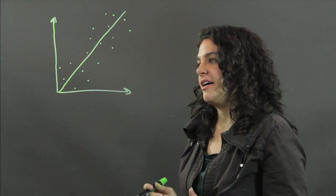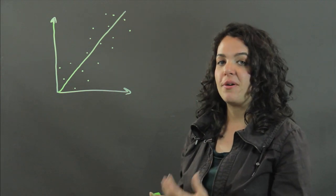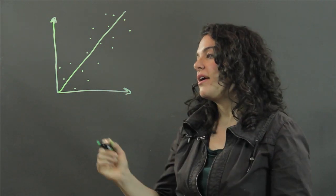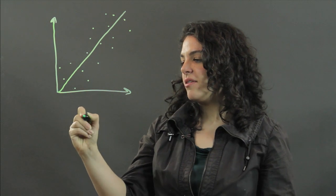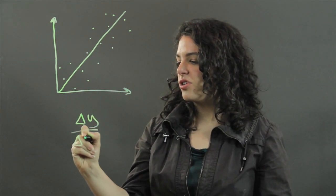So we have this line now that's the line of best fit and you can find the slope of this line.